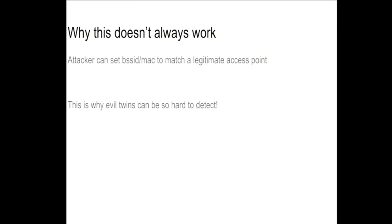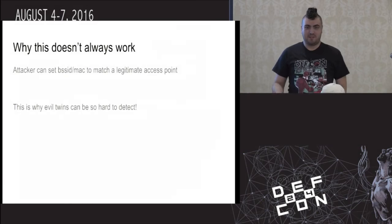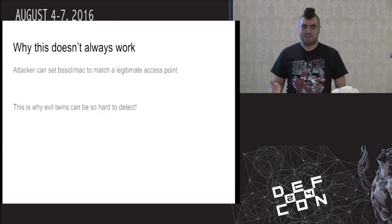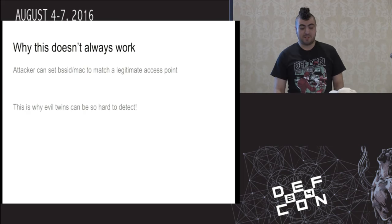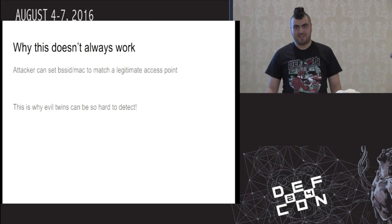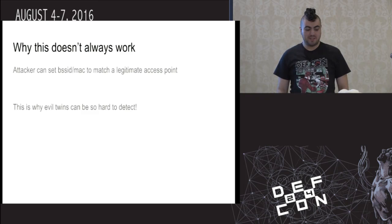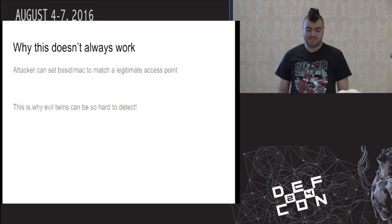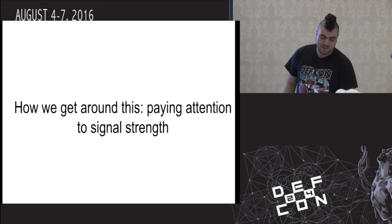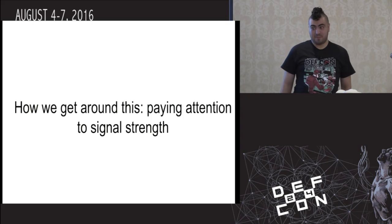This doesn't always work, because a motivated attacker can simply use something like Airodump to create a list of all the valid BSSIDs for your wireless network. At that point it's pretty easy to spin up an AP that has the BSSID matching one of your legitimate access points — not just the SSID and channel. This actually makes evil twins really hard to detect. The way we get around this is by paying attention to signal strength.